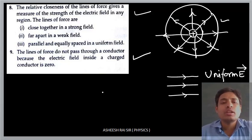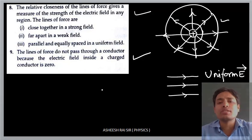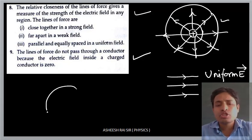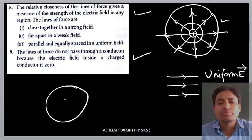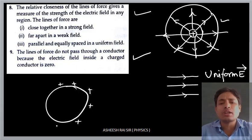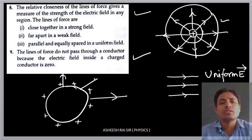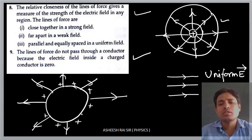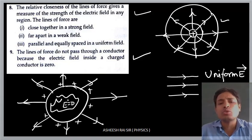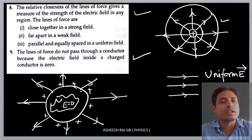Property number nine: the lines of force do not pass through a conductor because the electric field inside the conductor is zero. Suppose this is a conductor — when we charge it, the charges are localized at the surface of the conductor and the electric field lines start from the surface. But inside the conductor, the electric field is zero, so there are no electric field lines inside the conductor. Thank you very much.